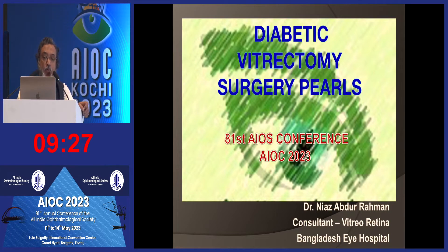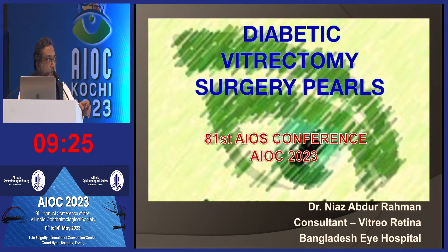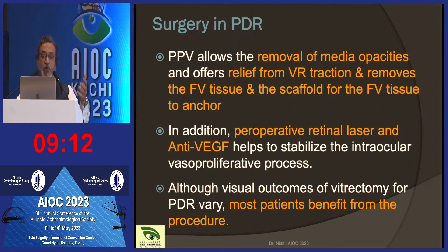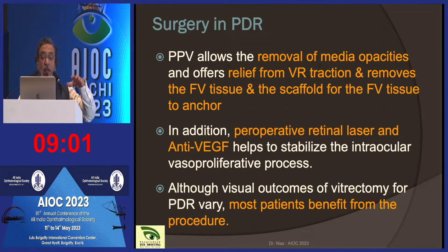In this session, I'm going to talk about surgical pearls on diabetic vitrectomy. To start off, in proliferative diabetic retinopathy, vitrectomy allows the removal of media opacities, offers relief from traction, and most importantly removes the fibrovascular tissue and the scaffold for the fibrovascular tissue to anchor. This is the most important part.